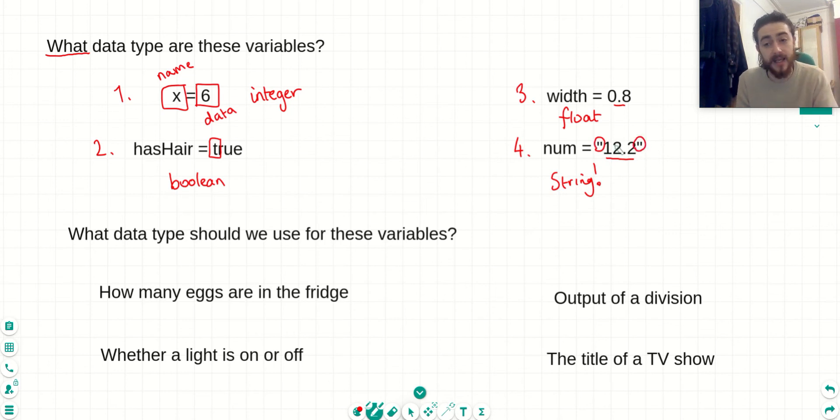And the reason it's a string is because it has these quote marks. A string is anything inside double quotes, even if the thing inside those quotes is a number or a decimal point, or the word true, if it has quotes, it is a string.